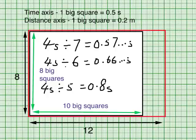But in comparison to the previous calculation of 1 big square is equal to 0.5 seconds, the graph that I plot using this scale of 1 big square is equal to 0.8 seconds will be smaller. I can use the same argument to decide on the number of big squares that I should use for the distance axis.